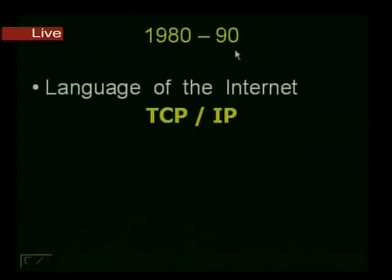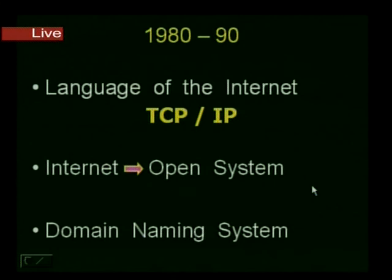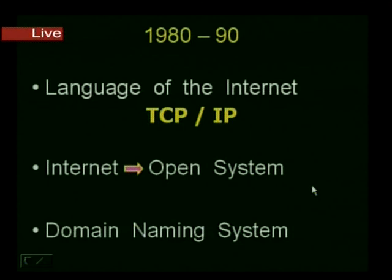In the 1980s and 1990s, the language of the internet — TCP/IP — was developed. The internet became an open system so that people could access it freely. Domain Naming System was also introduced, in which every computer is given a symbolic name that is converted into an appropriate IP address using a program called Resolver.